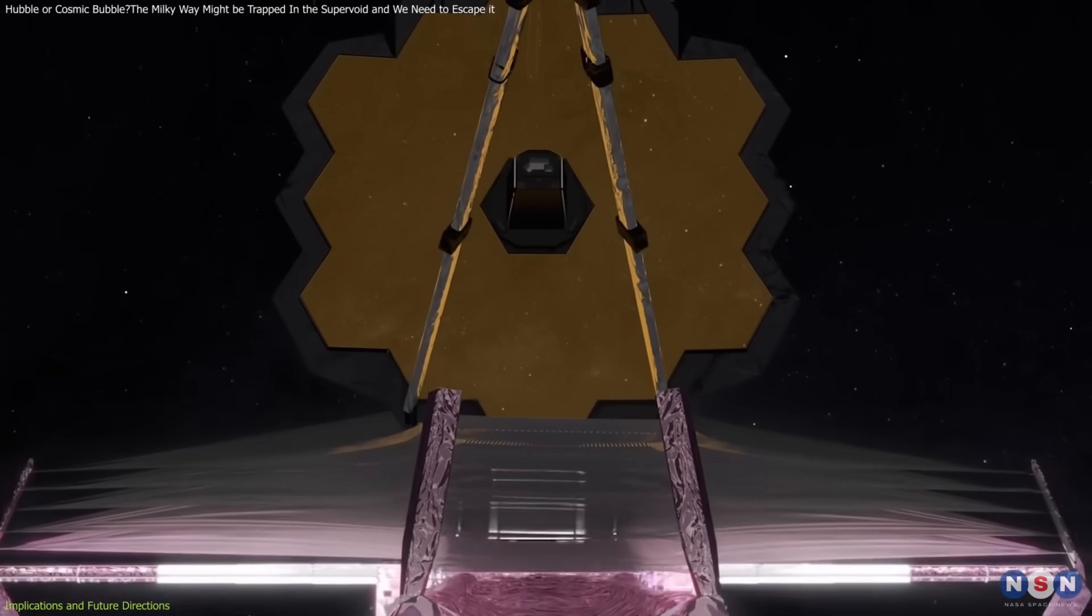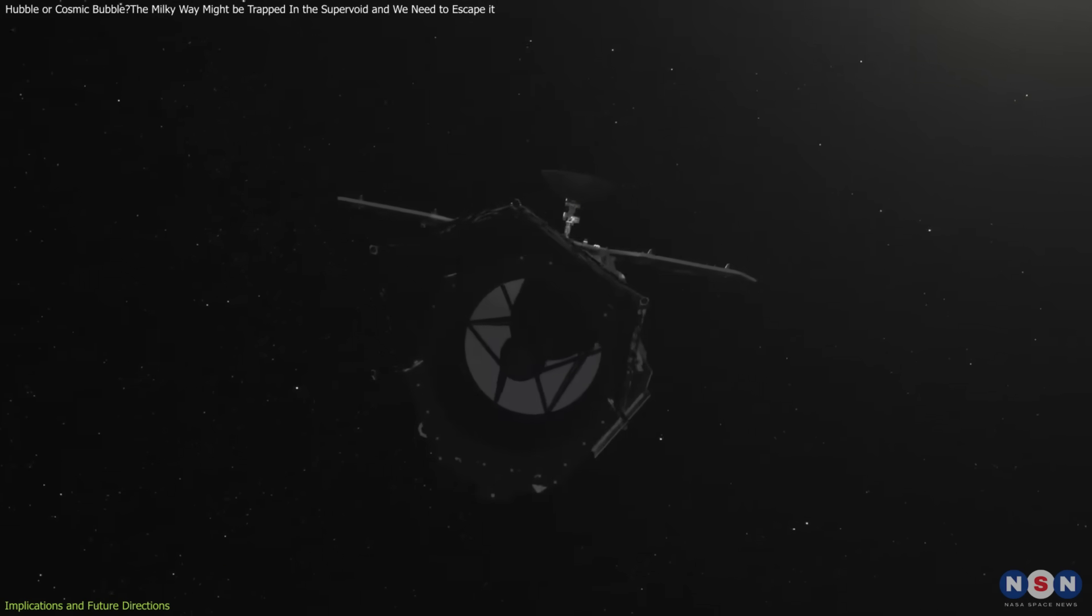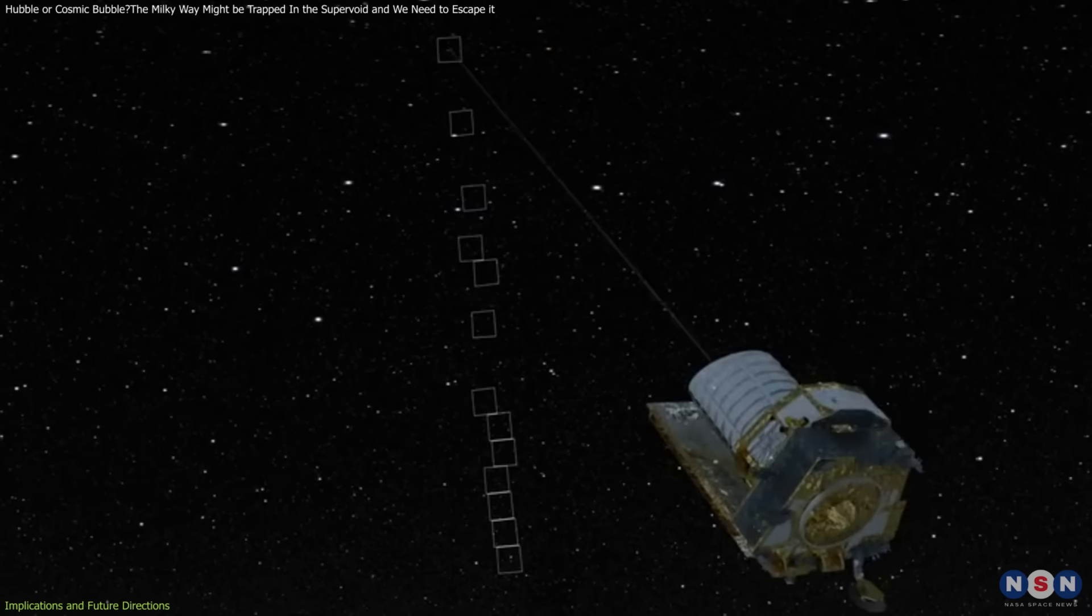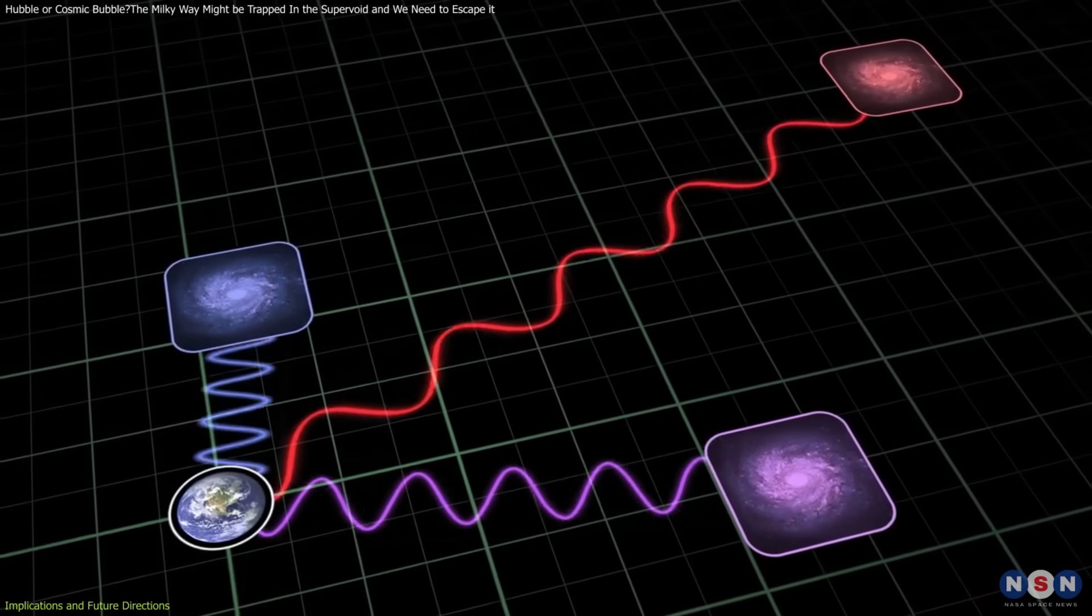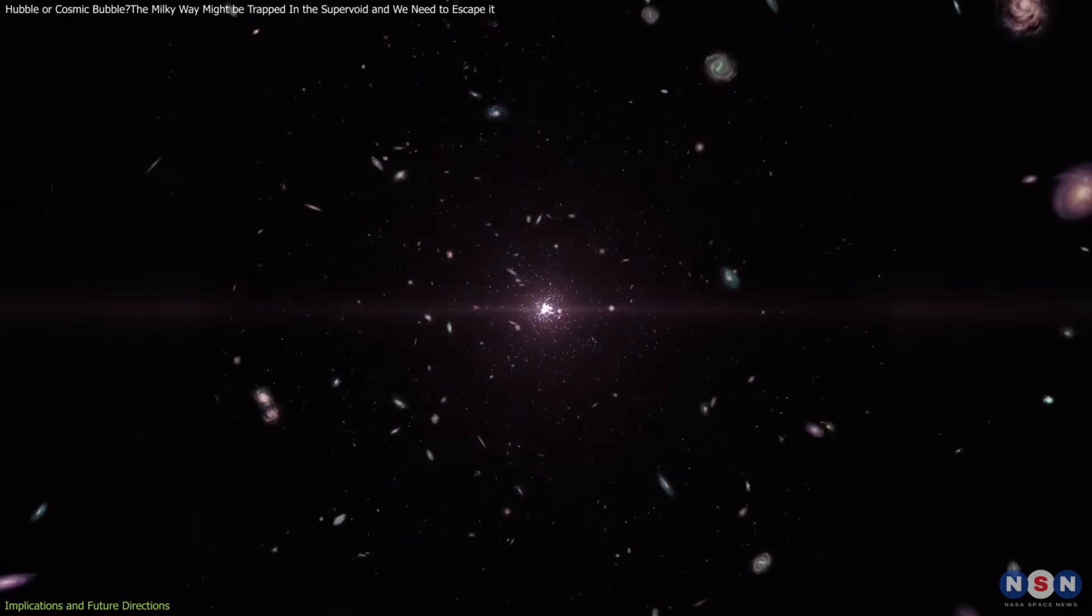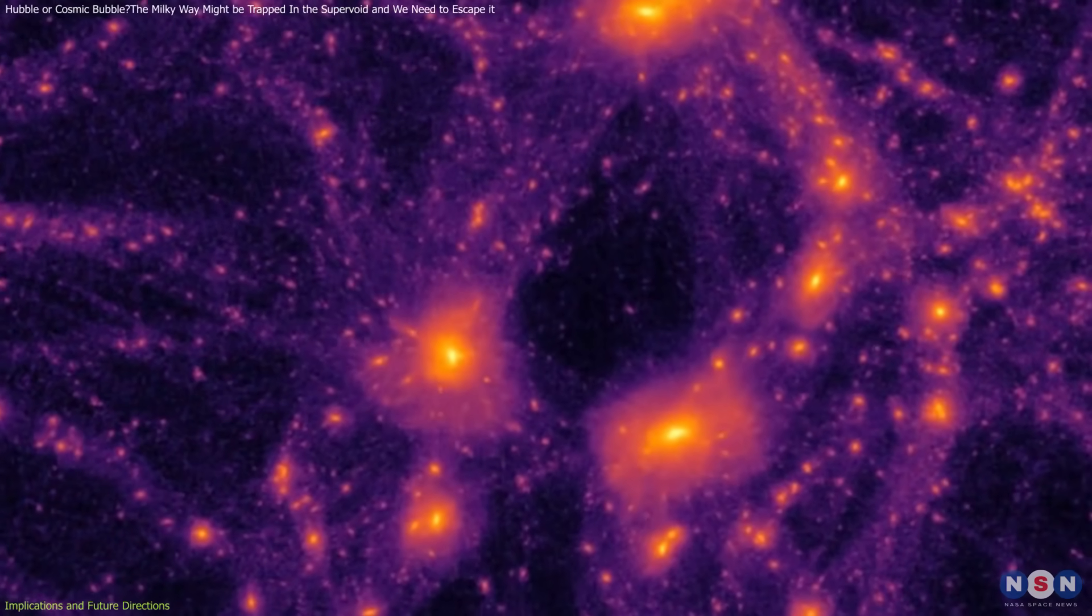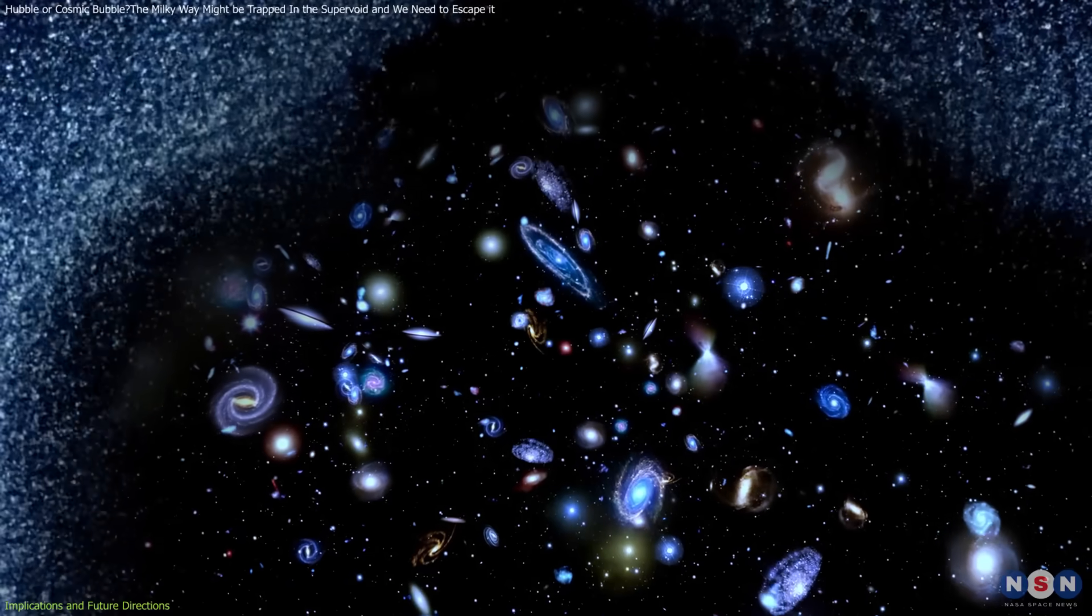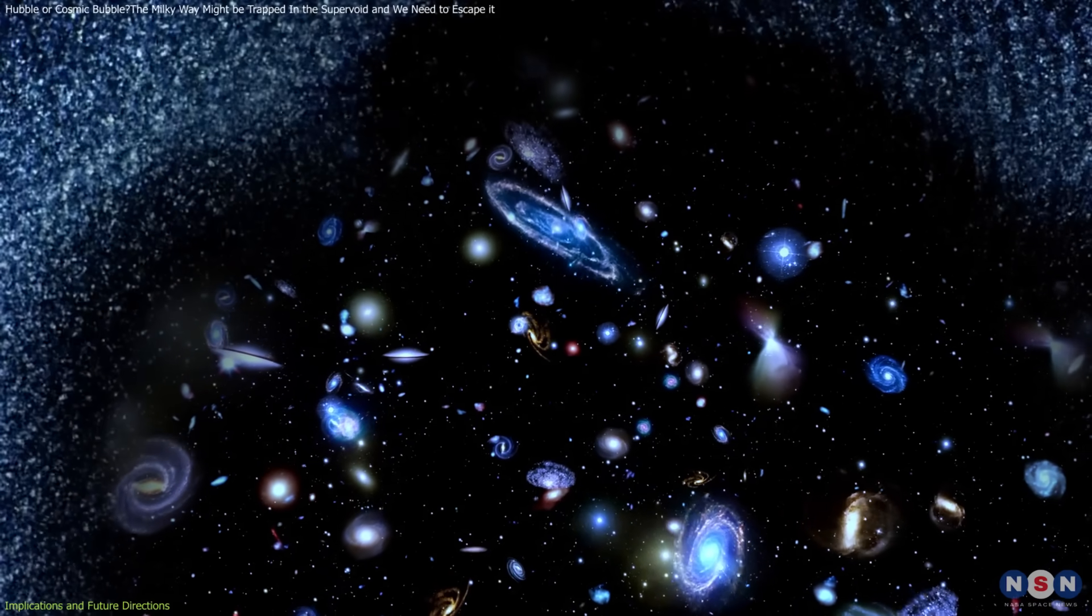Instruments like the James Webb Space Telescope, Euclid, and the Nancy Grace Roman Space Telescope can create detailed maps of cosmic voids, measure redshifts with unprecedented precision, and provide insights into the universe's expansion history. Observations from these instruments will refine models of large-scale structures and help confirm whether the KBC supervoid significantly skews local Hubble constant measurements.